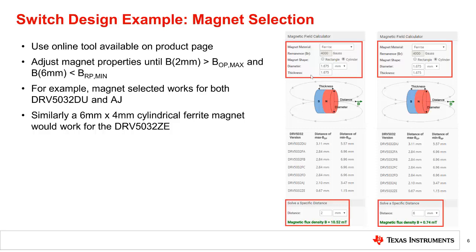Assuming the DRV5032 AJ is selected for this application, we adjust the magnet properties until the B-field amplitude at 2 mm exceeds a B-op max of 9.5 millitesla. Clearly, a cylindrical ferrite magnet with approximately 1.7 mm diameter by 1.7 mm thickness meets the required switching distances for the DRV5032 DU as well as the AJ version.